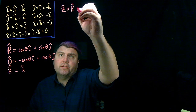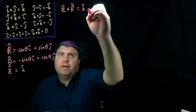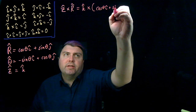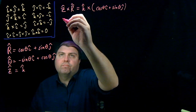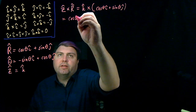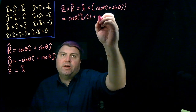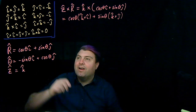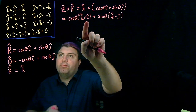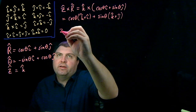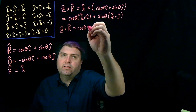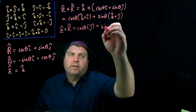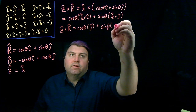So if we're doing this cross product, every time we see Ẑ we replace it with K̂, and every time we see R̂ we replace it with cosθ î + sinθ ĵ. This gives us cosθ (K̂ × î) + sinθ (K̂ × ĵ). K̂ × î is ĵ, so we get cosθ ĵ, and K̂ × ĵ is −î, so we get minus sinθ î.